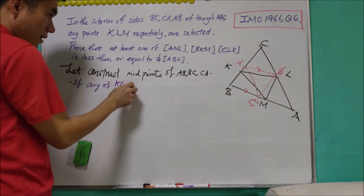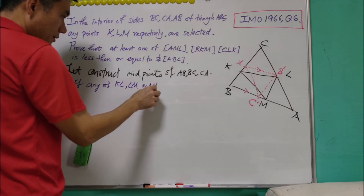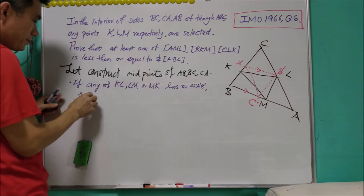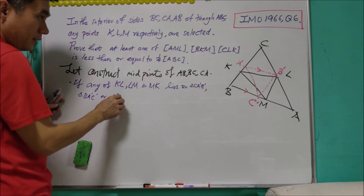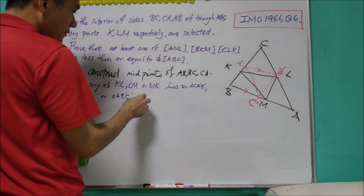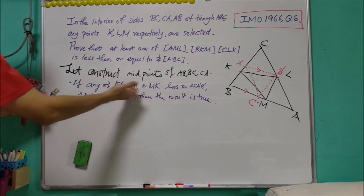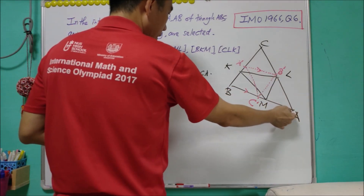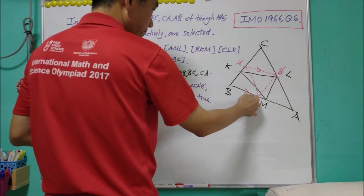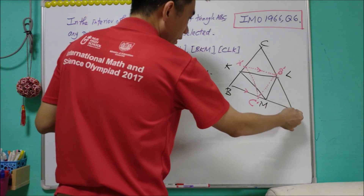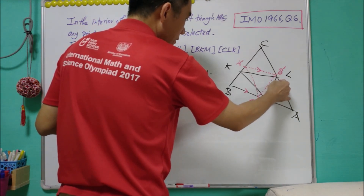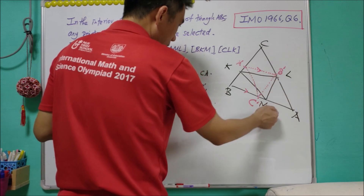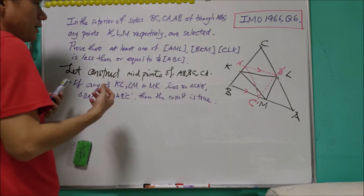If any of KL, LM, or MK lies within triangle CA prime B prime, triangle AB prime C prime, or triangle BA prime C prime, then the result is true. For example, if ML lies within triangle AB prime C prime, then the area of AML will be less than the area of AB prime C prime, which means the area of triangle AML is less than a quarter of the area of triangle ABC.